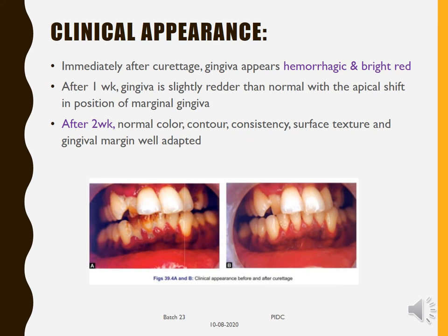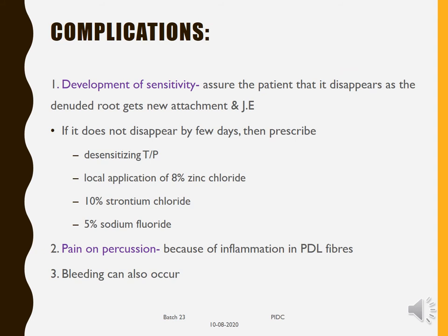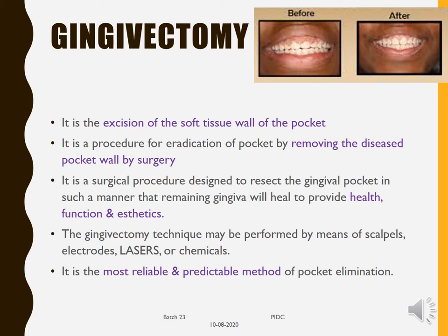The main complication after curettage is sensitivity. Assure the patient it will disappear as the denuded roots gain new attachment and junctional epithelium forms. If it doesn't disappear within a few days, prescribe desensitizing toothpaste, localized application of 8% zinc chloride, 10% strontium chloride, or 5% sodium fluoride. Pain on percussion may be present due to inflammation in the periodontal ligament fibers, and bleeding can also occur in some patients.